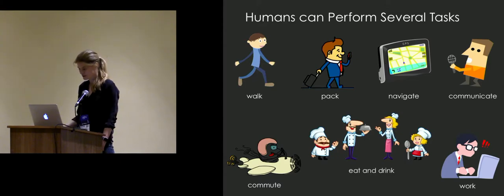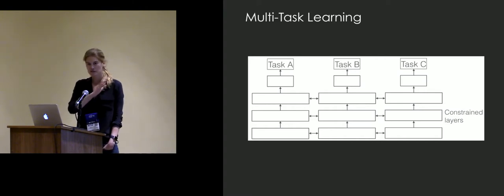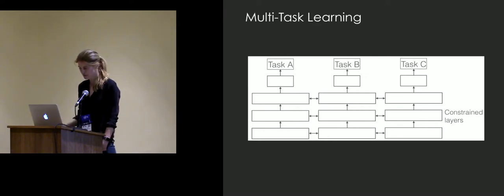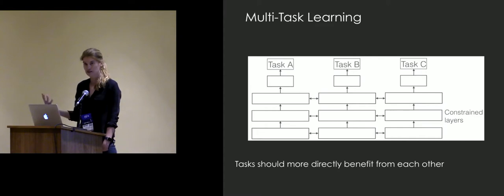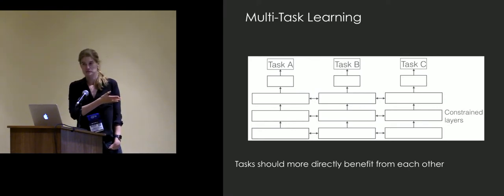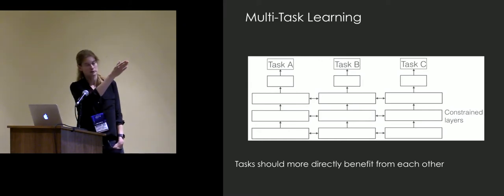People are very multitasking, but in current works, most works actually address just a single task. There have been different works trying to do multiple tasks — the easiest thing is just to train one task and then fine-tune on a new task, or fork the features from the previous task and train the residual feature needed to solve a new task, as in progressive neural networks. What I'm going to argue is that these tasks should more directly benefit from each other — we should actually be using their outputs, not just reusing features.